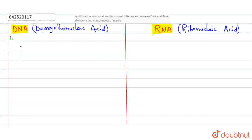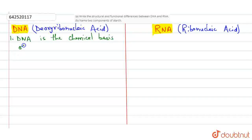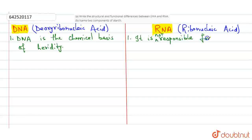We'll describe the differences here. The first difference: DNA is the chemical basis of heredity, while RNA is not responsible for heredity. I hope you get the point for the first difference — DNA is the chemical basis of heredity and RNA is not responsible for heredity.